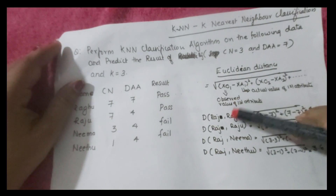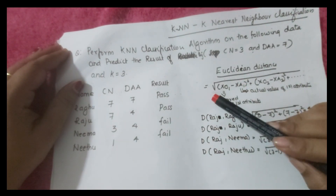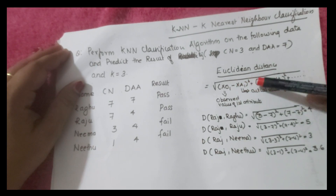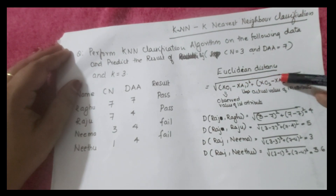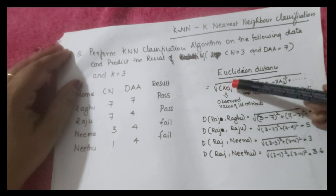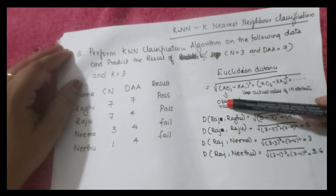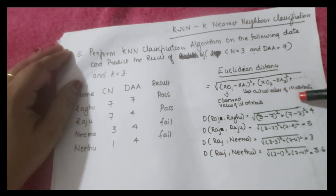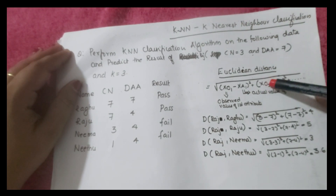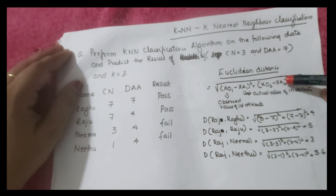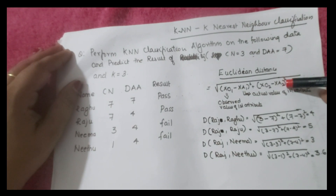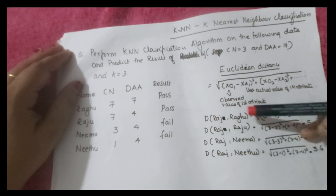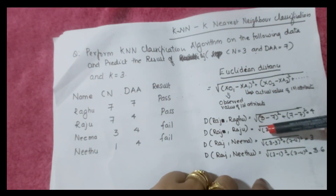The Euclidean distance formula is: √((x_o1 − x_a1)² + (x_o2 − x_a2)²), where x_o1 is the observed value of the first attribute, x_a1 is the actual value of the first attribute, and similarly for the second attribute.